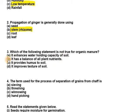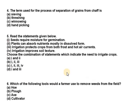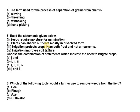So the right option for question three is: 'it has a balance of all plant nutrients' — that's wrong. Question four: the term used for the process of separation of grains from chaff is — sieving, threshing, winnowing, or hand-picking? The right option is threshing. Winnowing is used to separate grains and chaff by the farmers.